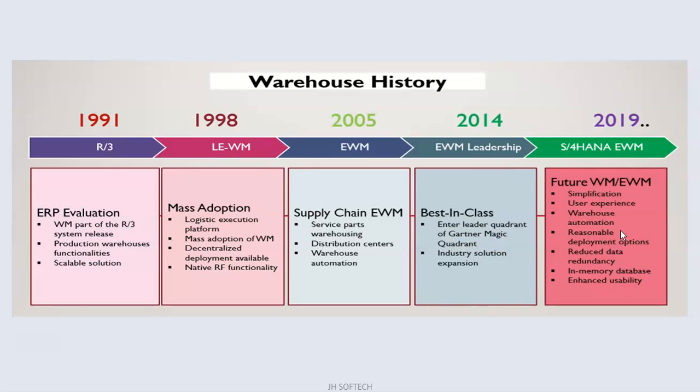In 2019, S4HANA EWM changed the entire game, introducing a significantly different tool solution for managing warehouse management. It brought simplification, improved user experience, warehouse automation, flexible deployment options, reduced data redundancy, in-memory database, and enhanced usability.